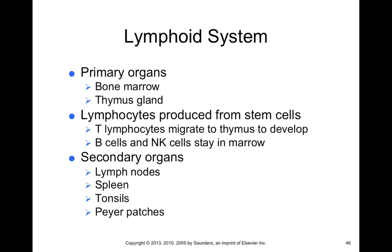Most of your immune cells are derived from the lymphoid system, which involves organs like bone marrow and the thymus gland. Red bone marrow in particular has a variety of stem cells that give rise to all your white blood cells — lymphocytes and the rest of your immune cells all come from red bone marrow. Many of these immune cells develop in different areas of your body, including bone marrow or the thymus.